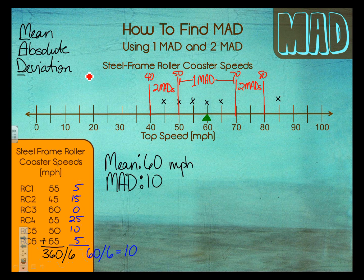What that means is everything within one MAD — all those points in that whole area — are considered normal. It's okay to deviate 10 above or 10 below based on the group's average; we view that as a normal point. Anything within two MADs is still considered normal, just not as normal. Depending on the context of your data, something within two MADs might cause a little concern, or you might just say close enough.